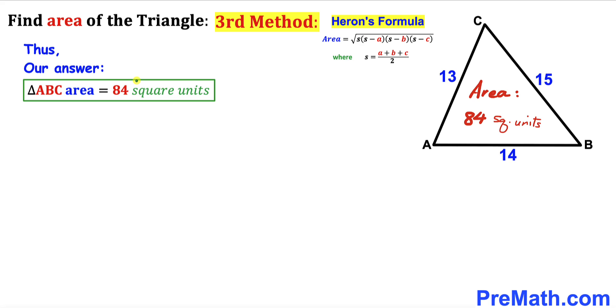Thus the area of this triangle turns out to be 84 square units using Heron's formula as well. Thanks for watching and please don't forget to subscribe to my channel for more exciting videos.